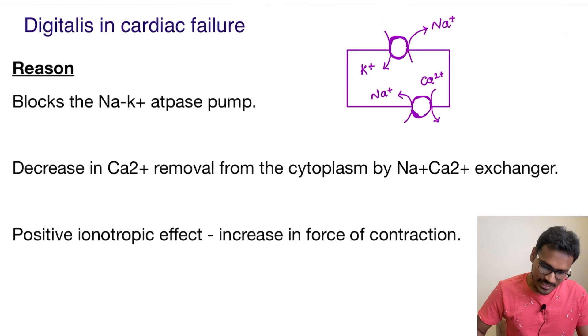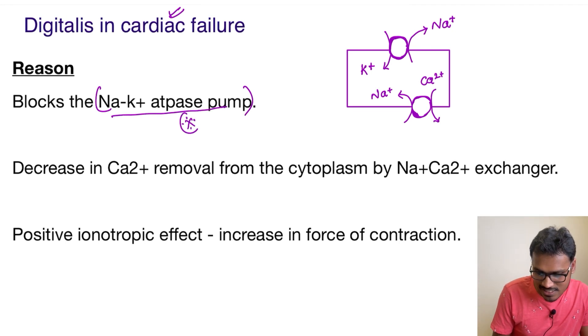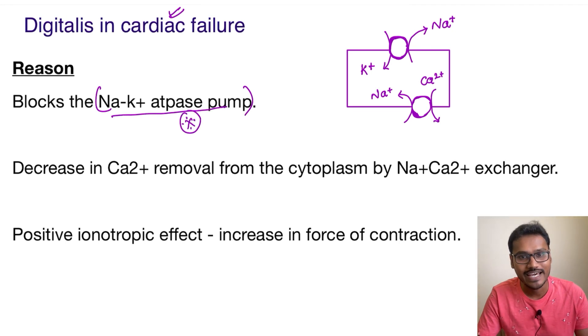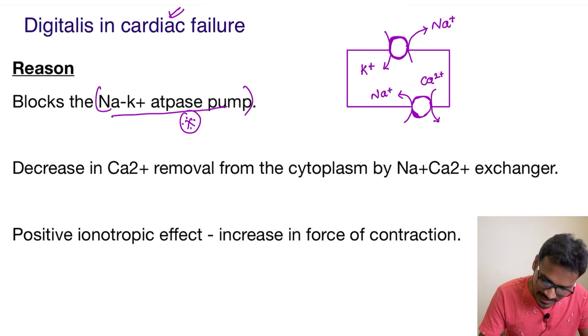Digitalis is used in cardiac failure because it blocks the sodium-potassium ATPase pump. It does not affect the calcium pump directly. Then how does this intracellular calcium increase? Let's try to understand.